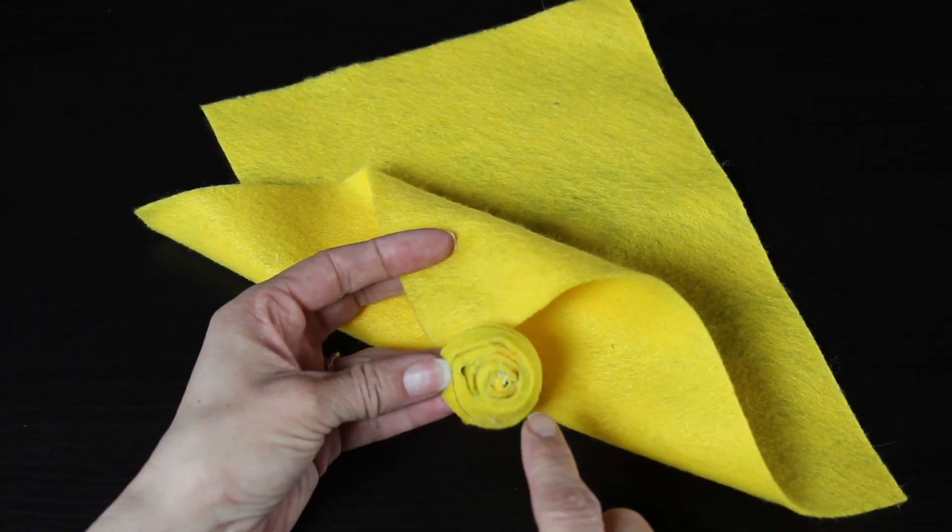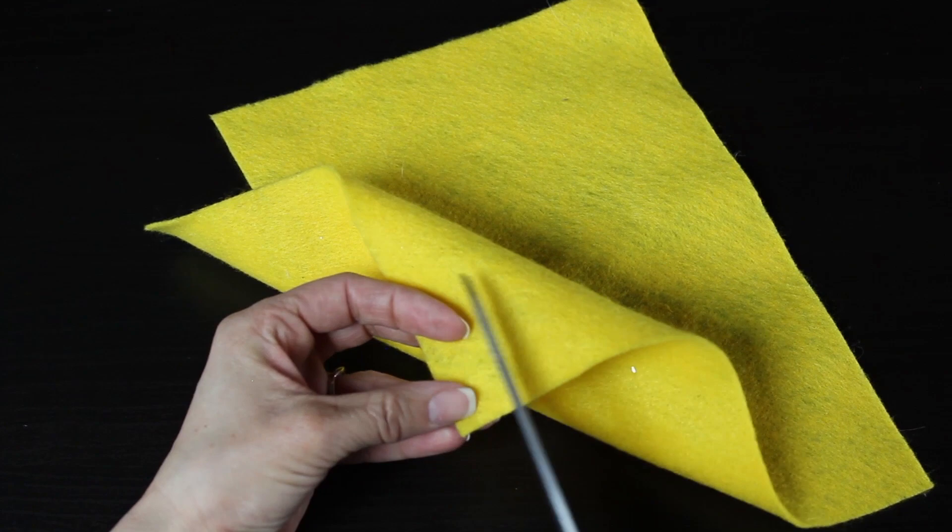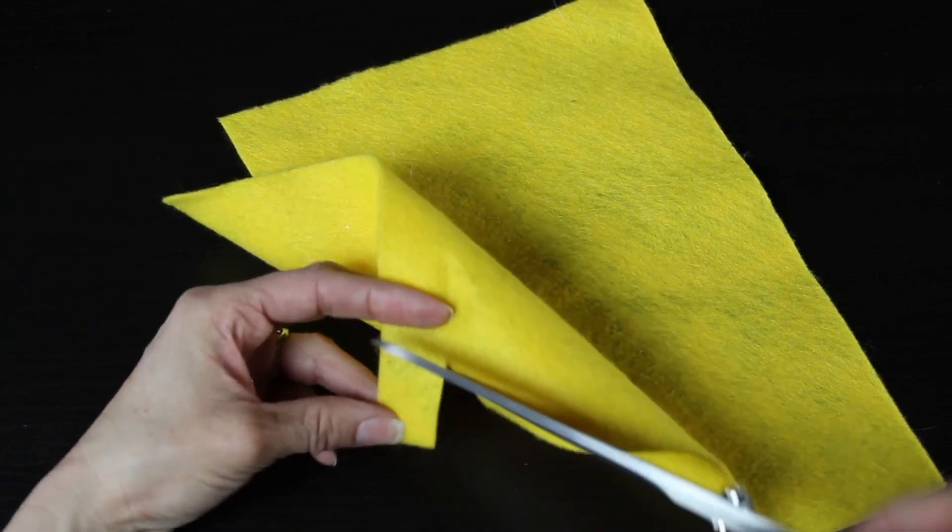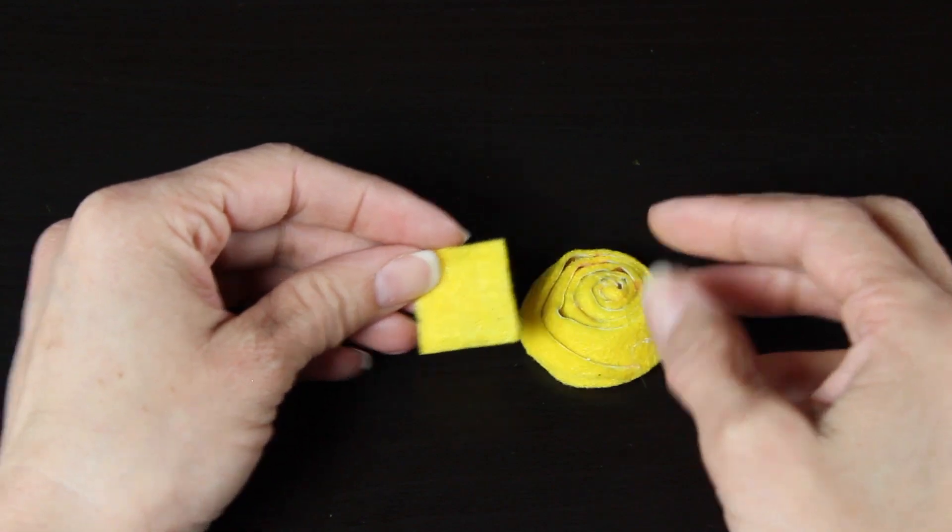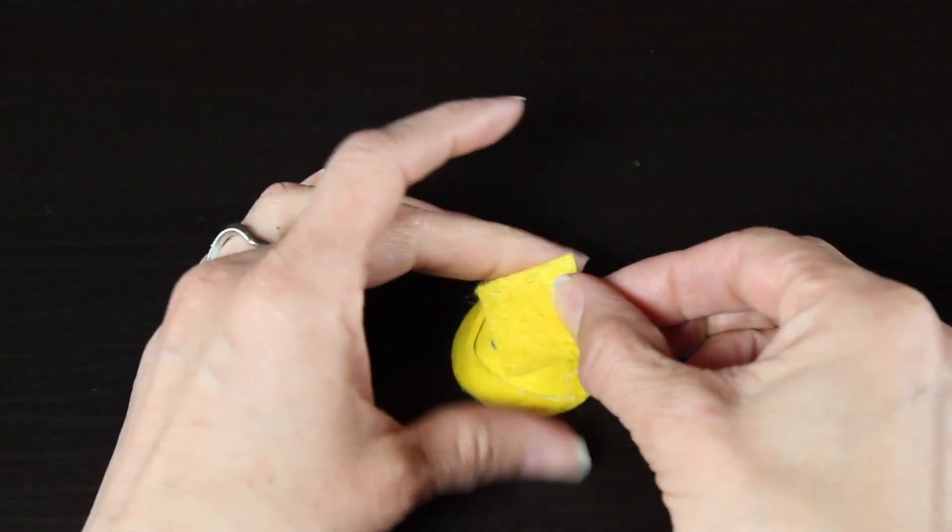Then I'm going to grab the same color of felt that I used in my flower and I'm going to cut out a square that will fit on the back of my flower. And then from the square I cut a circle and it does not have to be perfect as you can see here. That's not a perfect circle.